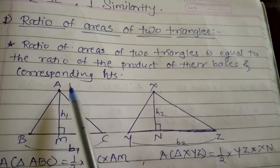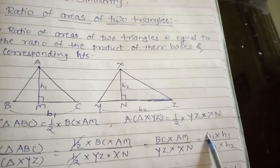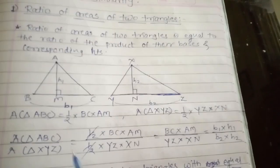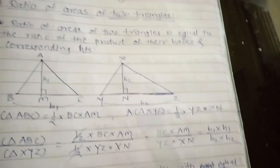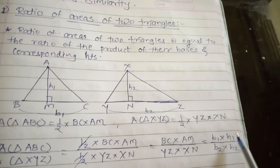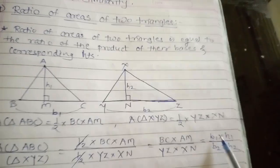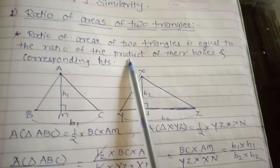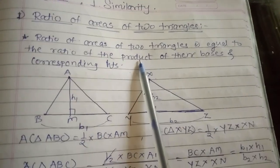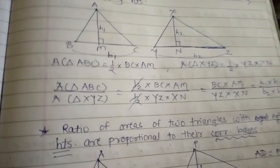So the meaning of this statement is: the ratio of area of two triangles is equal to the ratio of the product of their bases and corresponding heights. You have to remember this — it is the most important statement. Similarly, there are three more statements which you have to keep in mind to solve examples.